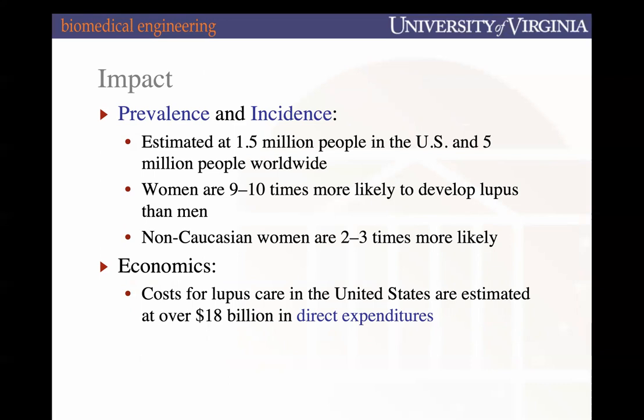Women are 90 times more likely to develop lupus than men. This is actually true across most autoimmune diseases — women are more susceptible to autoimmune diseases in general. In addition, women of color are typically even more likely than their Caucasian counterparts to suffer from autoimmune diseases.